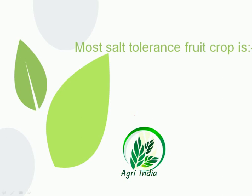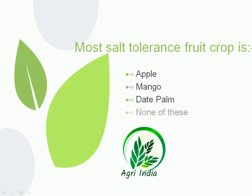Next question: which is the most salt-tolerant crop, meaning which crop can be grown in a saline area? Options are apple, mango, date palm, and none of these. The correct option is date palm, as apple and mango do not tolerate high salt levels.